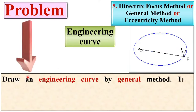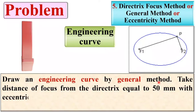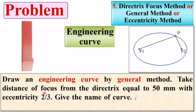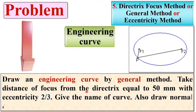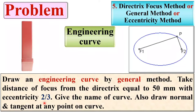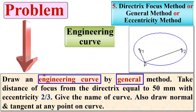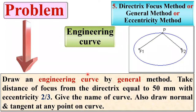Start with the description of the problem. Draw an engineering curve by the general method. Take the distance of the focus from the directrix equal to 50 mm with eccentricity 2 by 3. Give the name of the curve. Also, draw the normal and tangent at any point on the curve. I have written the output portion in a different color.